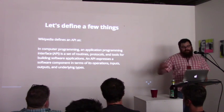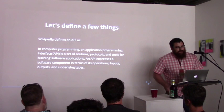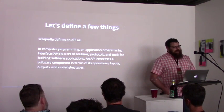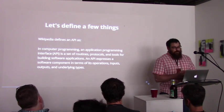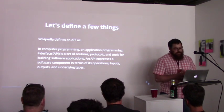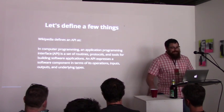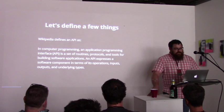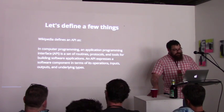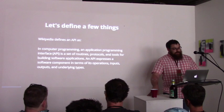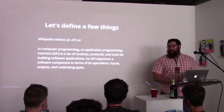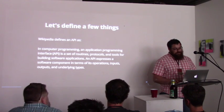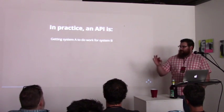I don't normally like to read text, but I really feel like this is worth reading. Wikipedia defines an API as: in computer programming, an application programming interface, or API, is a set of routines, protocols, and tools for building software applications. An API expresses a software component in terms of its operations, inputs, outputs, and underlying types. It's really a mouthful, and I don't expect anybody to really understand it unless you've been doing this for a while, so I'm going to break it down a little further.